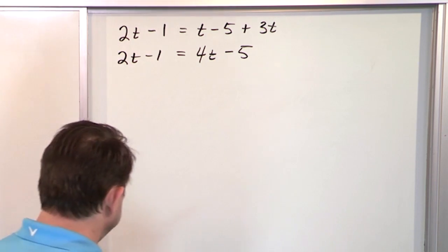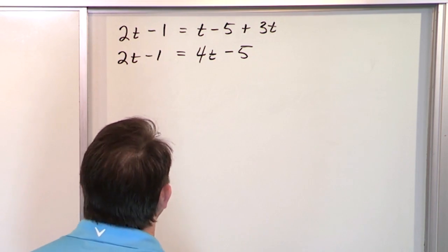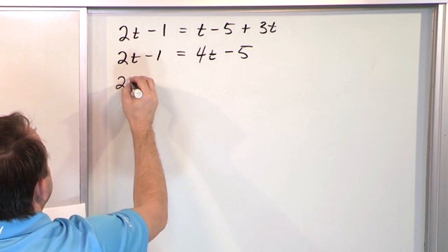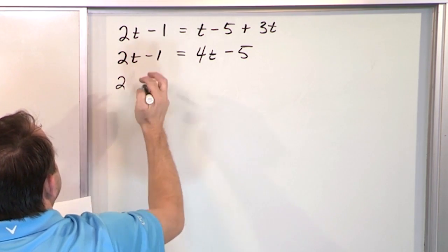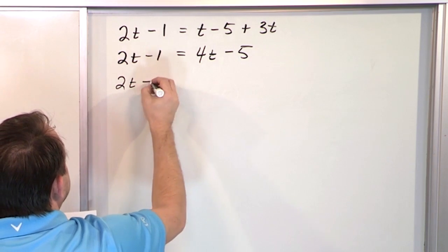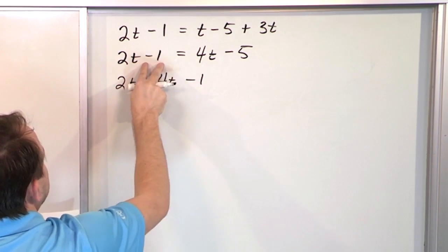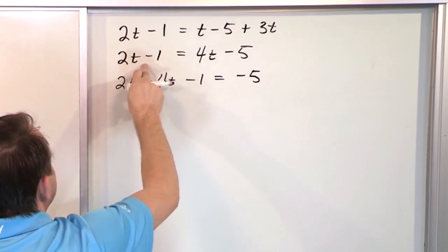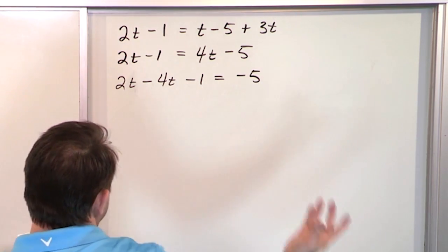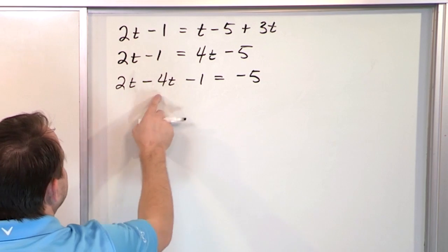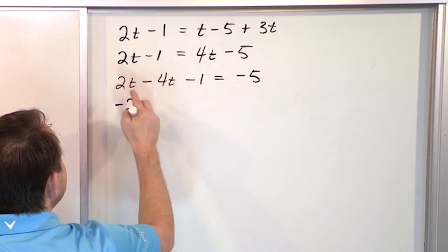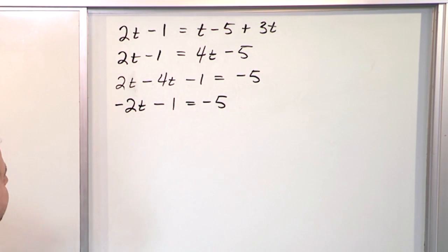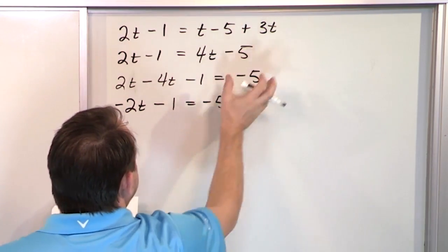Now let's move the 4t over by subtracting 4t from both sides. On the left: 2t minus 4t gives negative 2t, and we still have minus 1. On the right: 4t disappears, leaving minus 5. So we have negative 2t minus 1 equals negative 5. Now all the t's are collected in one spot.